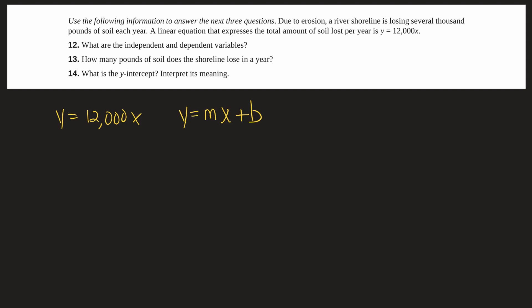Well it's there it's just zero. So in this case this is actually 12,000x plus zero. Of course we don't write the zero. It's there but we don't write it.